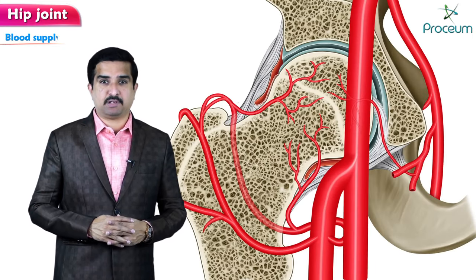Dislocations are categorized as either posterior or anterior based on the location of the head of the femur. Regarding posterior dislocation: 9 out of 10 hip dislocations are posterior, making them very common. The affected limb will be in a position of flexion, adduction, and internal rotation, with the knee and foot turned toward the midline. Sciatic nerve palsy is present in approximately 8 to 20 percent of posterior dislocation cases.